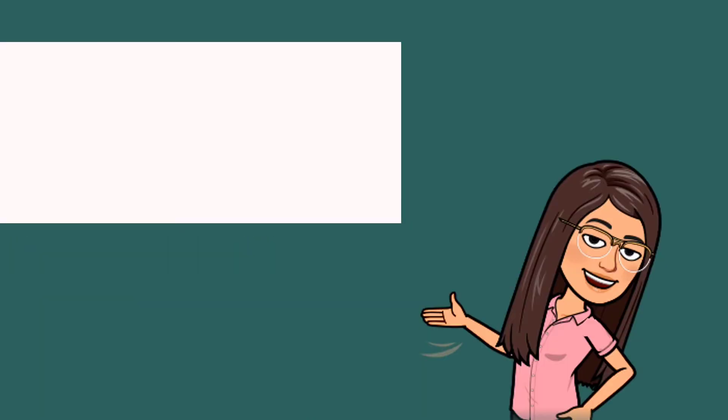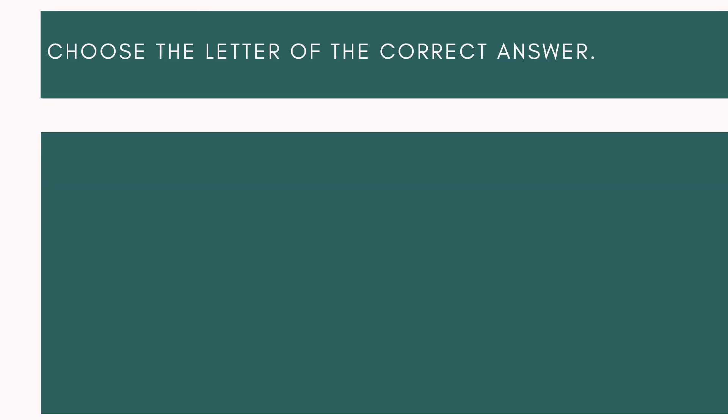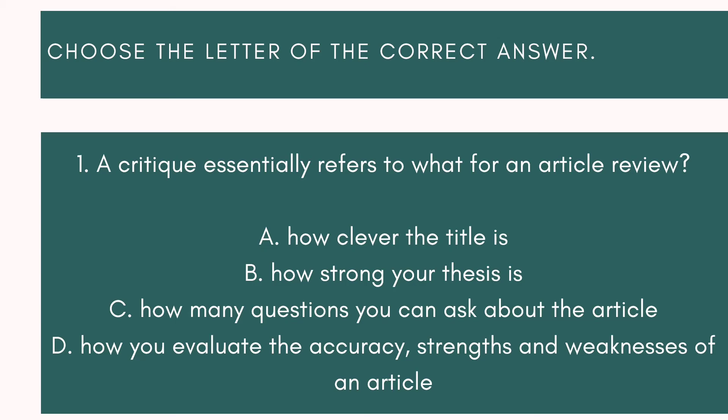Now that ends our discussion. Let's try this activity — get a piece of paper and answer. I know you can do this. Choose the letter of the correct answer. Number one: a critic essentially refers to what, for an article review? A) how clever the title is, B) how strong your thesis is, C) how many questions you can ask about the article, or D) how you evaluate the accuracy, strengths, and weaknesses of an article.